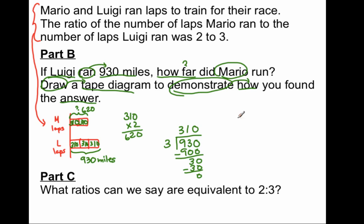So, to answer the question, Mario ran 620 miles. Now if you look at both of these problems, we're actually given what we call an equivalent ratio now. Let's answer part C.